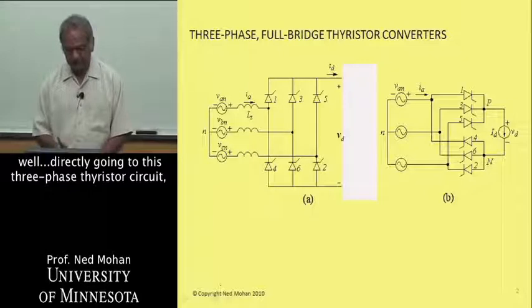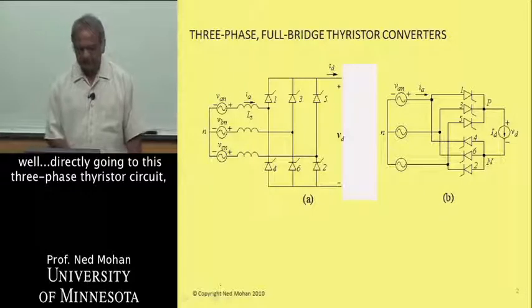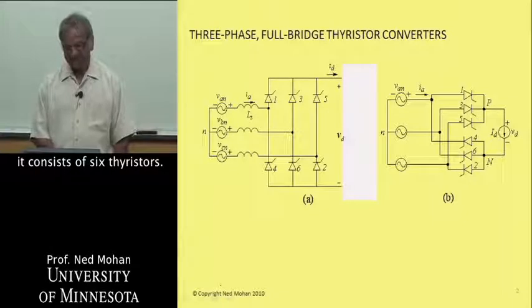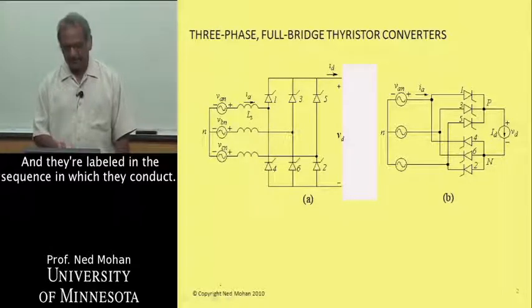Going directly to this three-phase thyristor converter circuit, it consists of six thyristors, and they are labeled in the sequence in which they conduct.